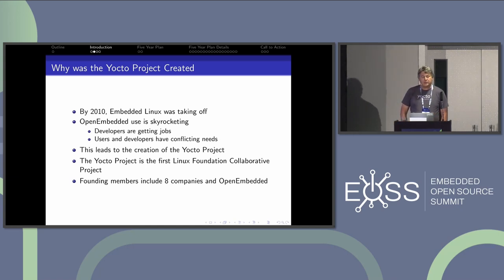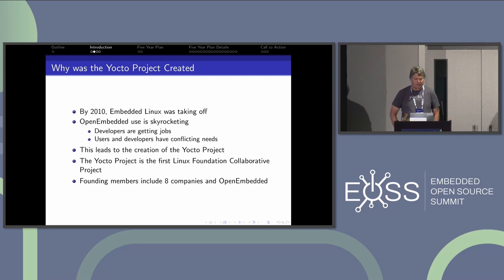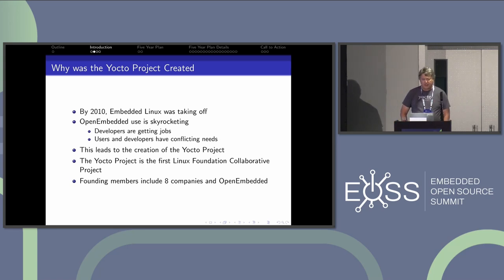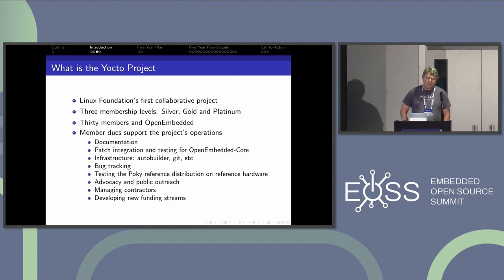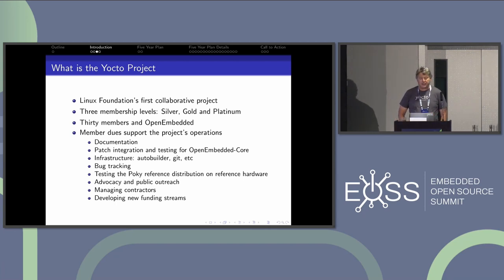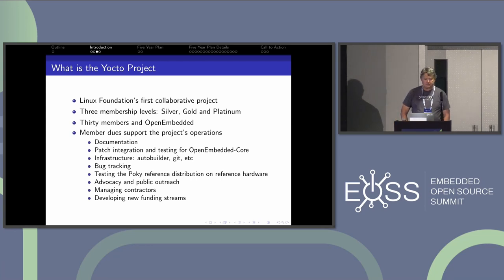The Yocto project was the very first Linux Foundation collaborative project — it was very new, and nobody really knew how to do a collaborative project at that time. We've learned a lot of lessons over the years. The founding members included eight companies and the OpenEmbedded organization. Today it's basically a company membership-based organization; you have to be a Linux Foundation member. There are three levels — silver, gold, and platinum — and it's now grown to 30 members and OpenEmbedded.